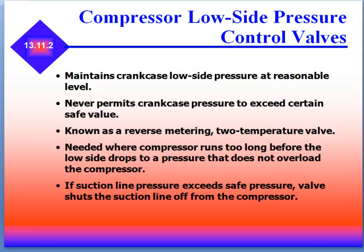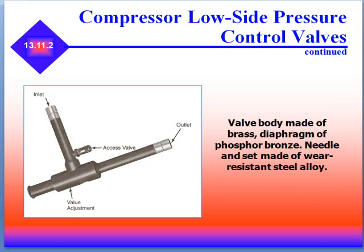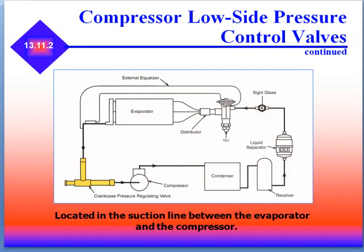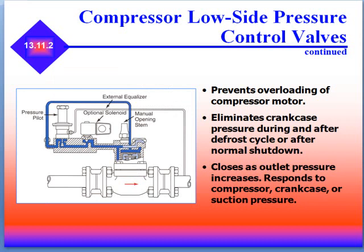If the suction line pressure exceeds safe pressure, the valve shuts the suction line off from the compressor. This is an example of the low side pressure valve, sometimes called a crankcase pressure regulator. The valve body is made of brass, diaphragm of bronze, and a needle insert may be made of wear-resistant steel alloys. It's located in the suction line between the evaporator and the compressor — shown in yellow in the picture. The low side pressure control valve prevents overloading of the compressor motor and eliminates crankcase pressure drain after a defrost cycle or normal shutdown.